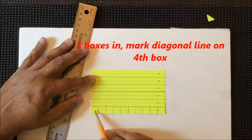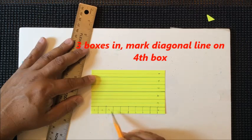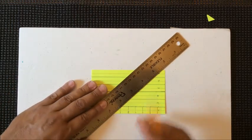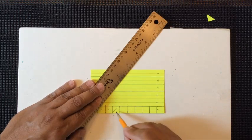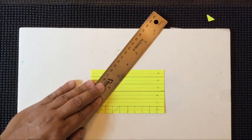I want you to count three boxes in. This would be one, two, three boxes in and on the fourth box, we are going to connect the corners, align your ruler, connect the corners and make a diagonal line. As you can see, we have two triangles out of that diagonal line.